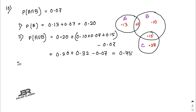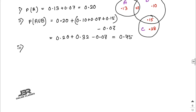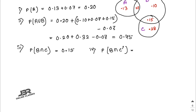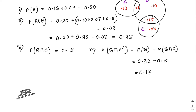Number three: P(B ∩ C) — direct answer from the diagram: 0.15. Number four: P(B ∩ C complement) = P(B) − P(B ∩ C) = 0.32 − 0.15 = 0.17.